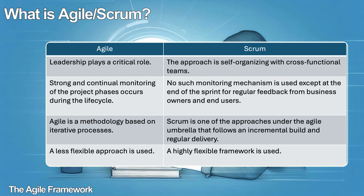There are four notable differences between Scrum and Agile. Firstly, for Agile, leadership plays a critical role, whereas in Scrum the approach is self-organizing with cross-functional teams. Secondly, with Agile there is strong and continual monitoring of the project phases throughout the lifecycle, whereas for Scrum no such monitoring mechanism is used — the only exception being at the end of the sprint for feedback to the business and end users. Thirdly, the Agile methodology is based on an iterative approach whereas Scrum follows an incremental build. Lastly, Agile embodies a less flexible approach compared to Scrum, which is a highly flexible framework.